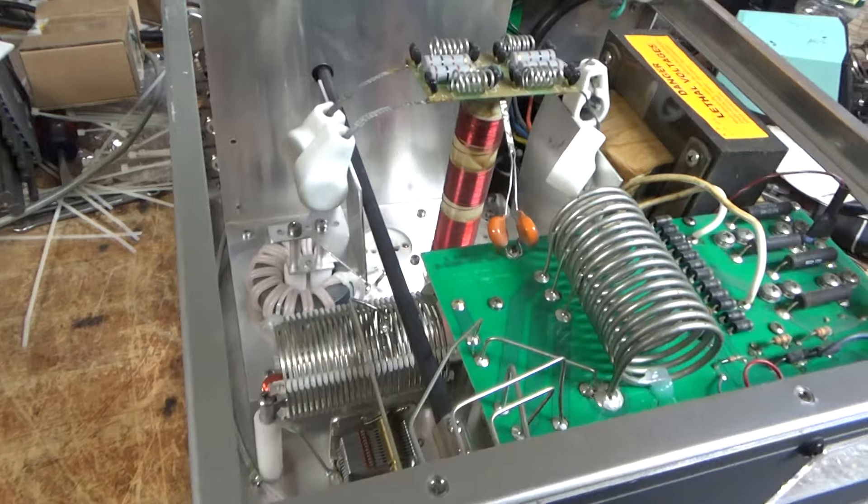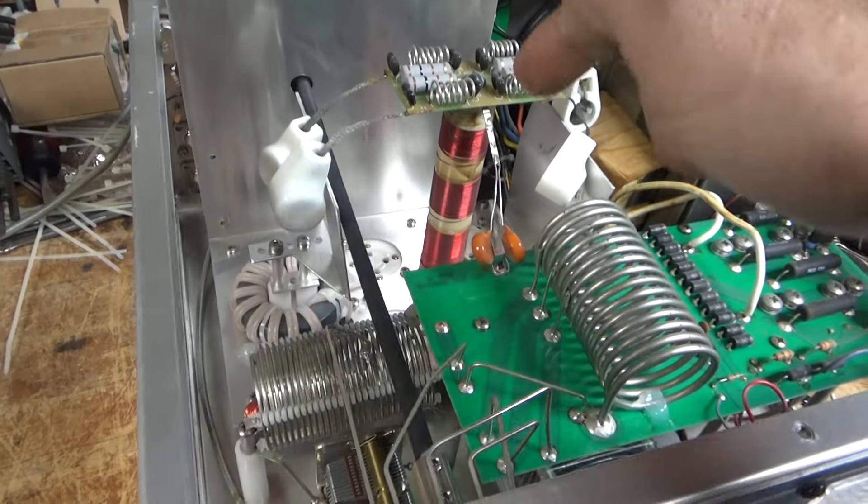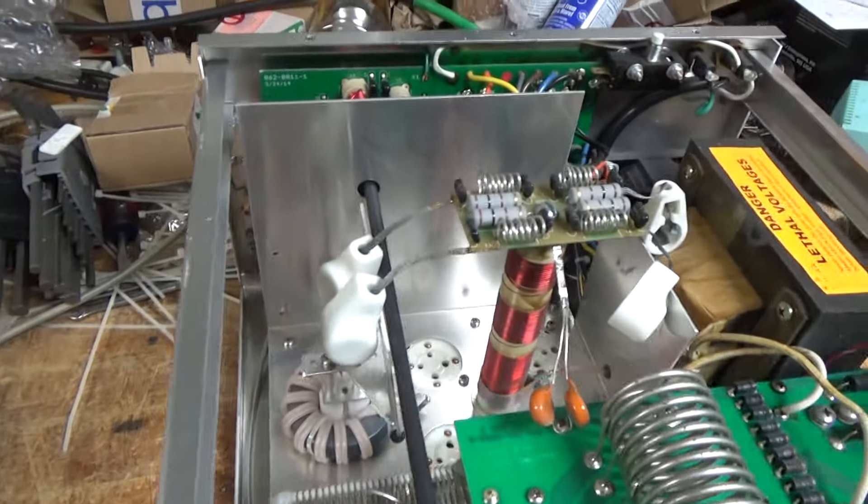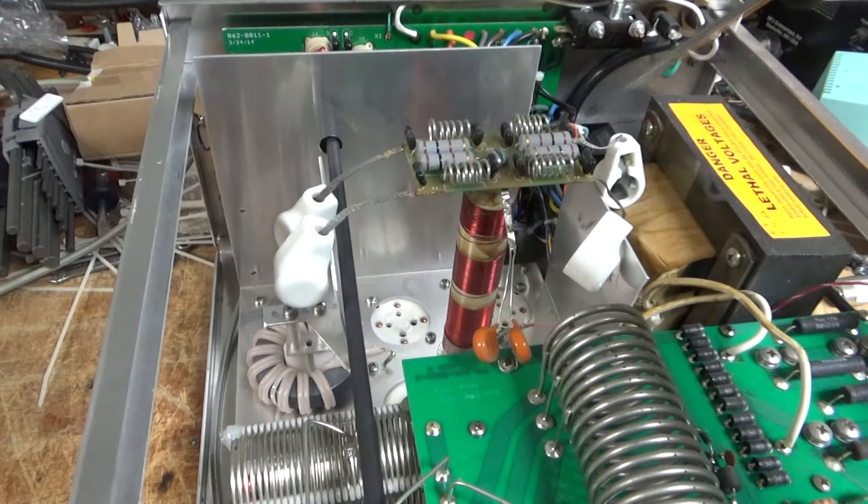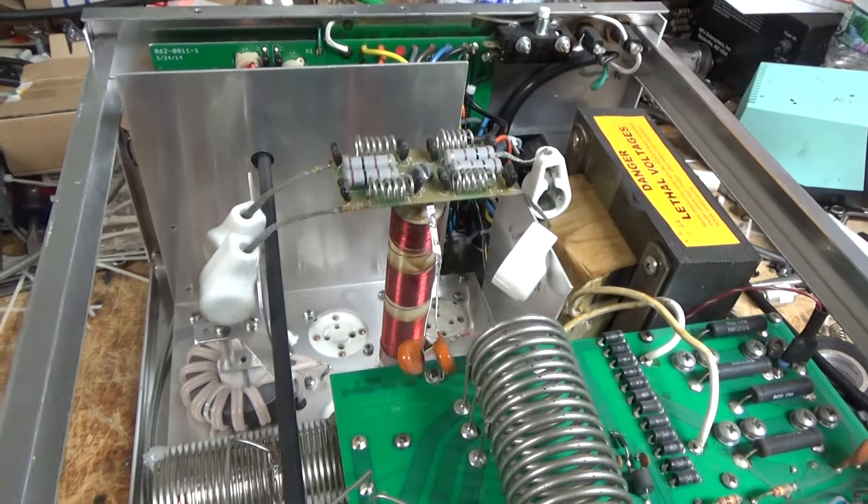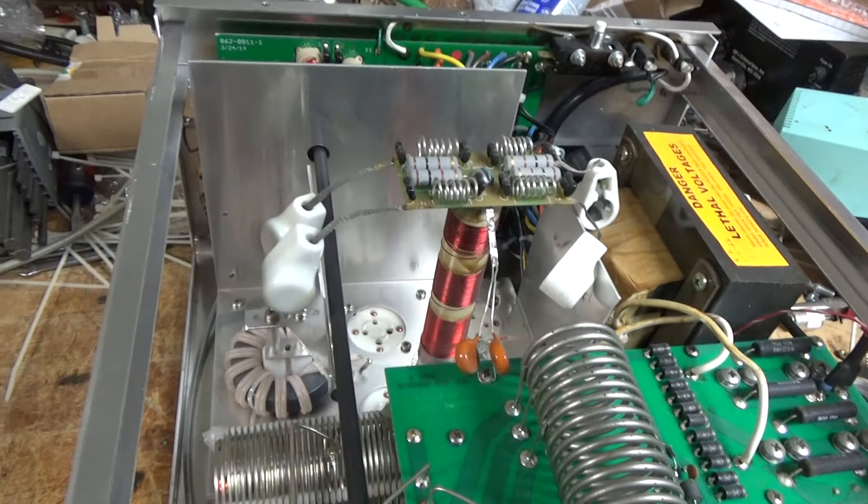I need to take the whole socket assembly out. Put the gas discharge tubes in. Ground the grids right to the metal. Remove the metal oxide varisters from the board in the back and do the 10 meter modification.